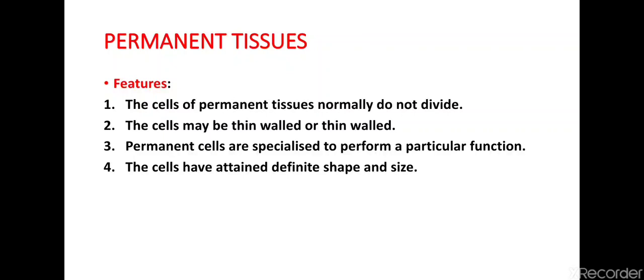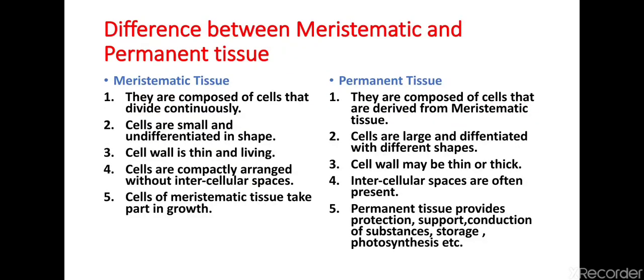So these are the two main types of plant tissues. The difference between meristematic and permanent tissues: meristematic tissues are composed of cells that divide continuously, whereas permanent tissues are composed of cells derived from meristematic tissues. Second, cells are small and undifferentiated in shape in meristematic tissues, whereas in permanent tissues cells are large and differentiated with different shapes.